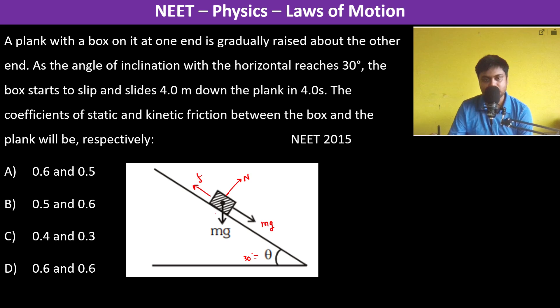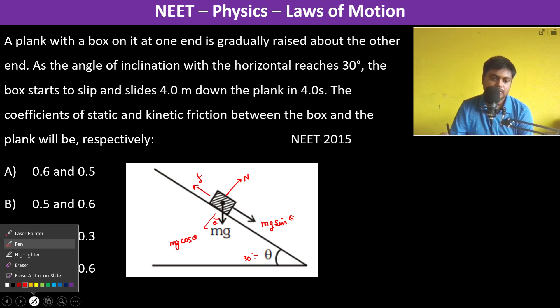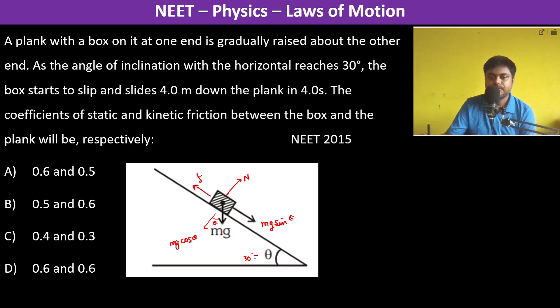This is theta, so this is 90 minus theta, this is theta. So mg gets resolved as mg sin theta and here as mg cos theta. So therefore we can write N is equal to mg cos theta and friction is equal to mg sin theta.